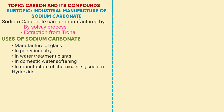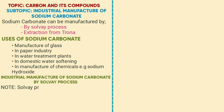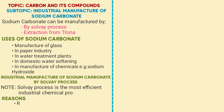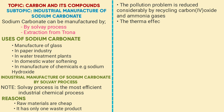Sodium carbonate can be manufactured by the Solvay process or extraction from trona. In our lesson today, we want to look at industrial manufacture of sodium carbonate by the Solvay process. Why is the Solvay process the most efficient industrial chemical process? The raw materials are cheap. It has only one waste product. The pollution problem is reduced considerably by recycling carbon dioxide and ammonia. The thermal effects on the water source near the plant are minimized by recycling.